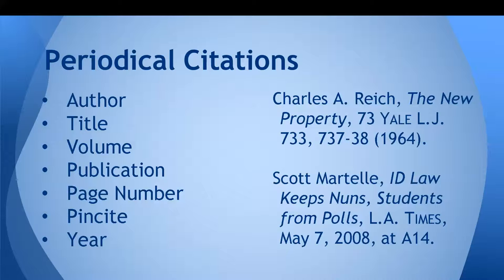Periodical materials encompass law review articles, newspaper articles, and annotations like American Law Reports. Citing to an article requires a little more detail than a book citation. You need the author's name, the full title of the article in italics, then the volume number, abbreviated title of the journal or newspaper, the page number the article starts on, then the page or pages you are citing to, followed by the year of the publication in parentheses. In the case of a newspaper that publishes daily, you'll need the full day, month, and year the article was published. We will talk more about citing to online newspaper articles when we talk about electronic sources — just keep in mind that you need to check Bluebook Rule 18 if you're citing to an online source.